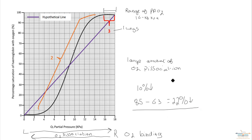That's the end of this second video — you may want to review it again and use the notes alongside it. In the third video, things should start to make more sense. The next video will look at oxygen dissociation in more detail, examining something called the Bohr shift and adding to this graph to explain further why the S-shaped curve is so important biologically.